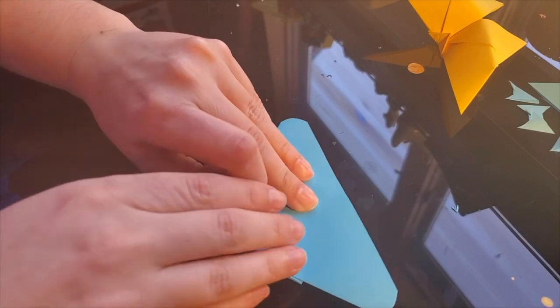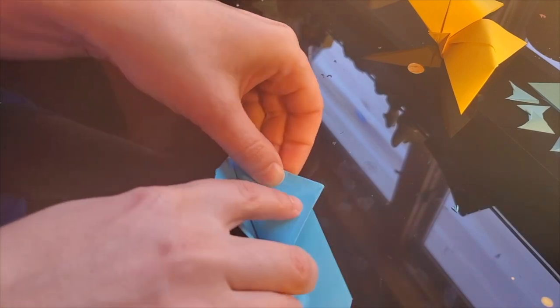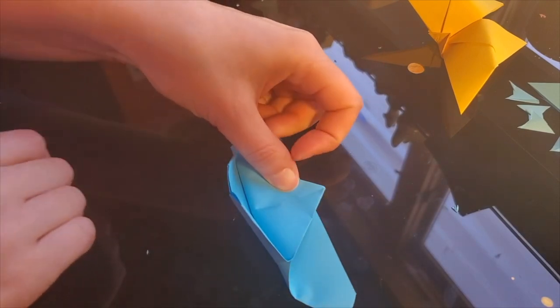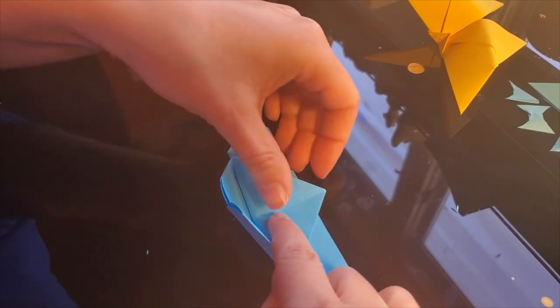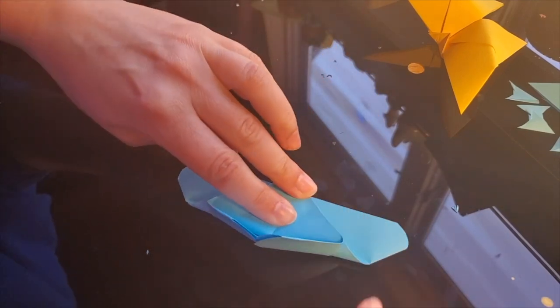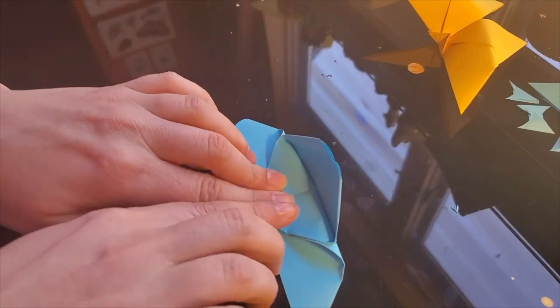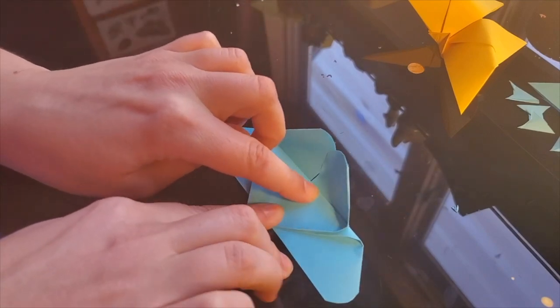Fold the corner up to the edge, overlapping so that there is a tab left over. Crease underneath the lower wings.